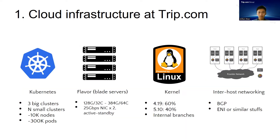Some specific information: most of our workloads now run on Kubernetes. We have three big clusters and several small ones, with a total of 10,000 nodes and 300,000 pods. Most nodes are blade servers, which run with 4.19 or 5.10 kernels. For inter-host networking, we use BGP for on-premises clusters and ENI for self-managed clusters on the cloud.